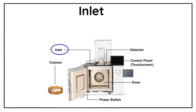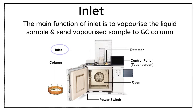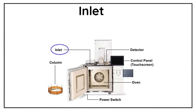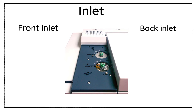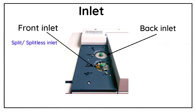Now comes the second part of the GC instrument which is called the inlet. The main function of the inlet is to vaporize the liquid sample and send the vapors of the sample into the GC column. Generally there are two inlets in Agilent make GCs, commonly called the front inlet and back inlet. Technically, the front inlet is called the split/splitless inlet and the back inlet is called the purged packed inlet.